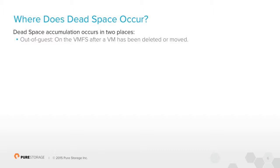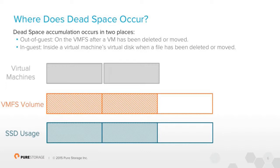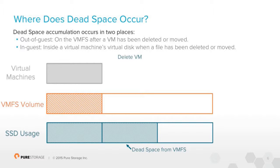So where does dead space occur in a VMware environment? There are two different places: one out of guest and one inside of the guest. So if we create a virtual machine, fill it with data — space is being used on the file system and on the SSD. We create another VM, same thing. If we delete that virtual machine, it cleans it up on the file system, but the underlying physical volume still thinks it's there — so there's dead space. And if we delete some data inside the VM, the VMFS volume no longer sees that as being used, but the underlying SSD still sees that as being used. So dead space can build up inside the guest or outside from deleting a virtual machine.